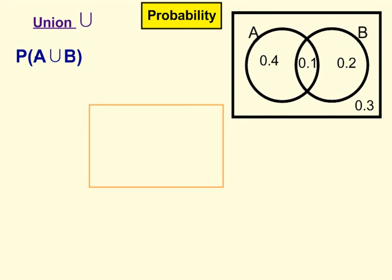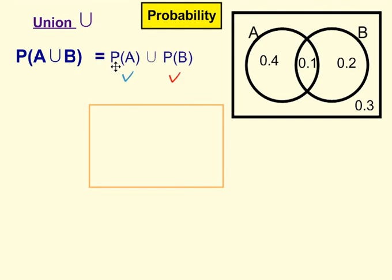Hello, in this video we're going to look at probability and in particular union, represented by this U shape here. So this here is read the probability of A union B. Our first step is going to be to rewrite this, so break it apart, as probability of A union the probability of B.